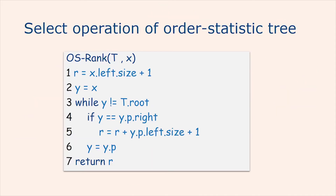Now we will see the rank operation in an order statistic tree. Given a pointer to a node x in an order statistic tree T, the procedure OS-Rank returns the position of x in the linear order determined by an inorder tree walk. You can see the pseudocode of the rank operation in the slide. We first initialize the values of r and y, then we go up to the root of the tree and add the rank of the parent's node if the node is on the right side of the parent's node; otherwise, we simply go up.